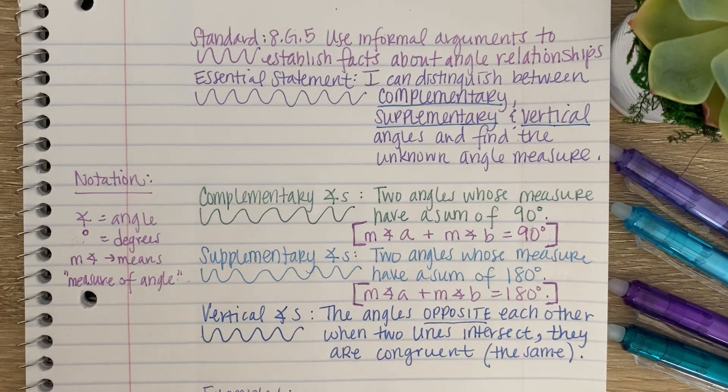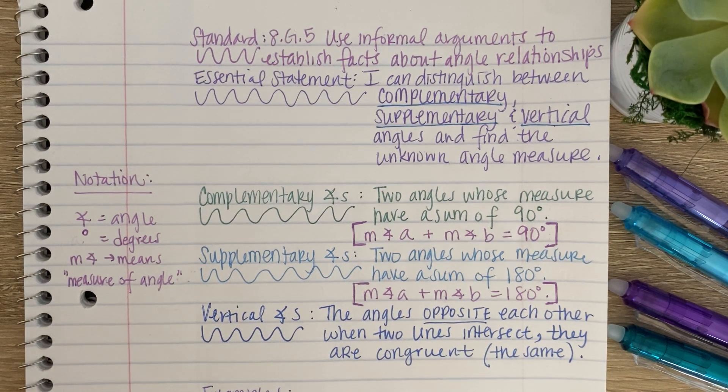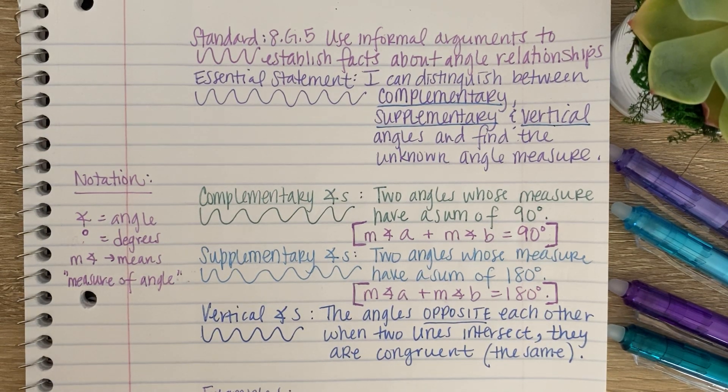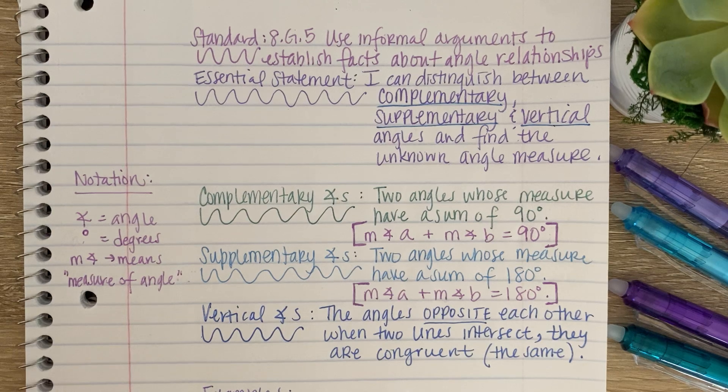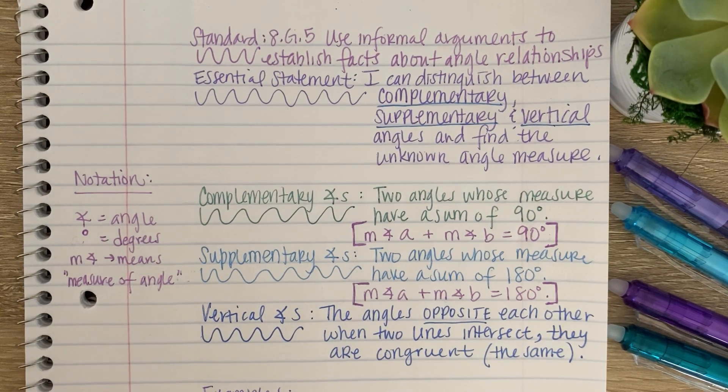Now, supplementary angles are two angles whose measure have a sum of 180 degrees. So algebraically, it's the measure of angle A plus the measure of angle B is equal to 180 degrees. So if you have two angles and they equal 180 degrees, those are supplementary angles. And vertical angles are the angles opposite each other when two lines intersect. So they are also congruent. Congruent means the same.